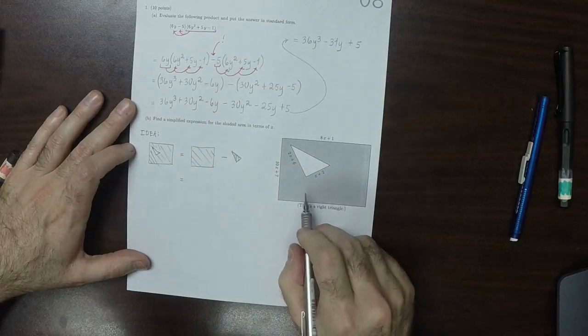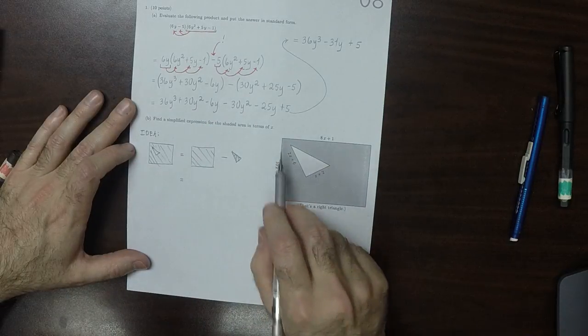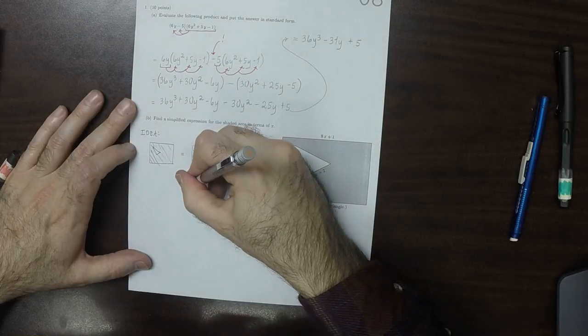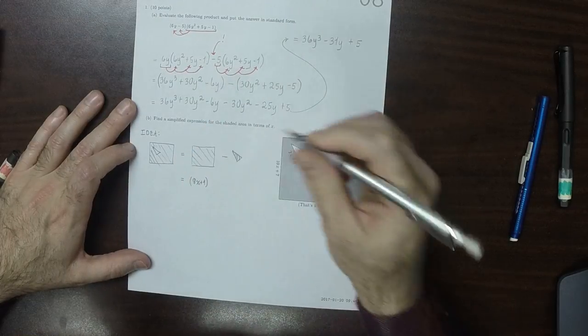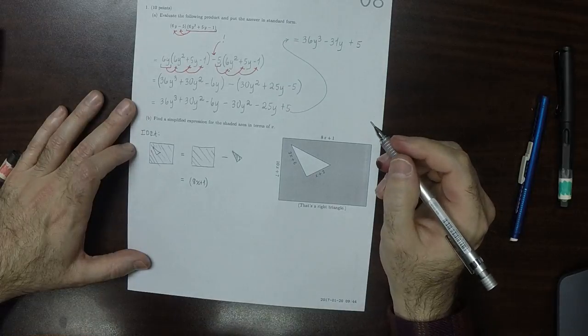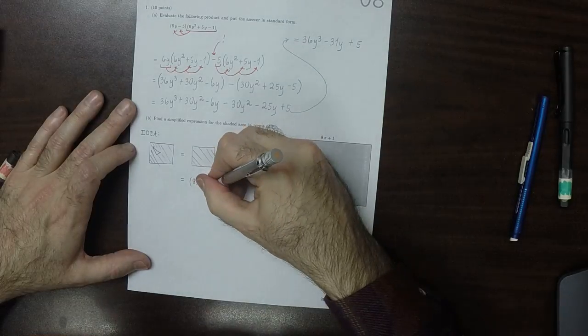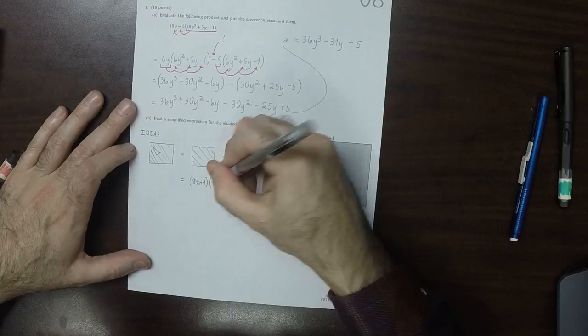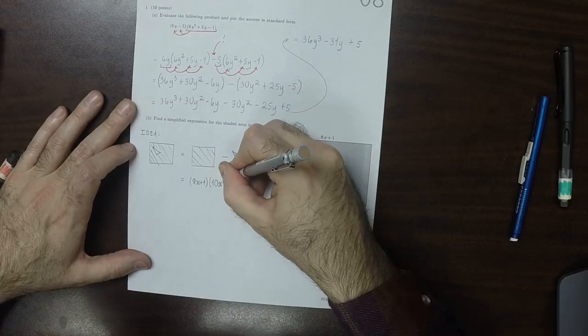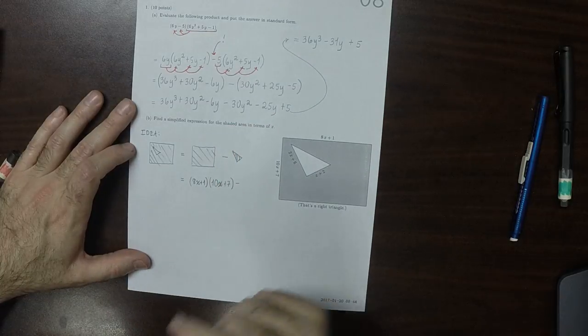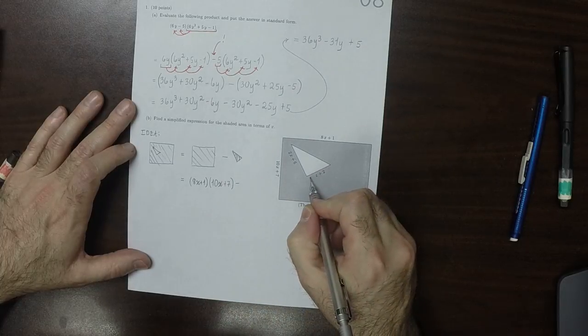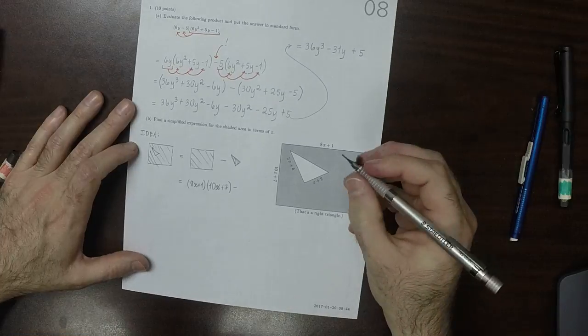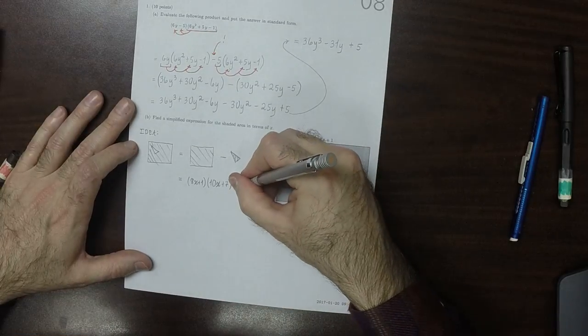So the area of the rectangle, base times height. So 8x plus 1 times 10x plus 7. Minus, so the area of any triangle is base times height and then over 2. So that would be half...